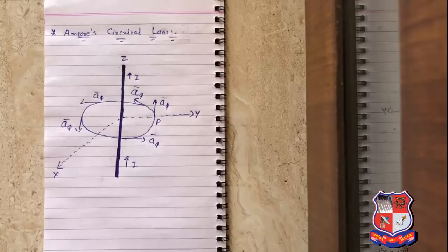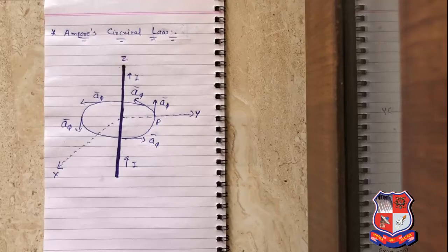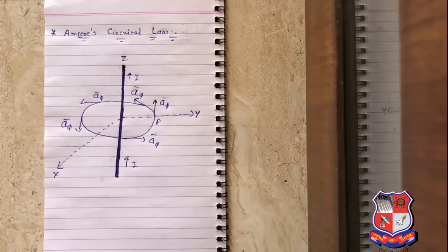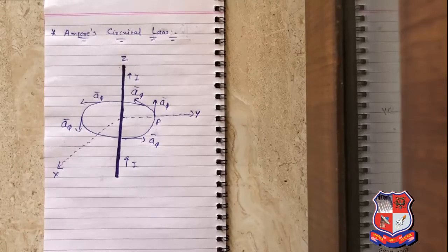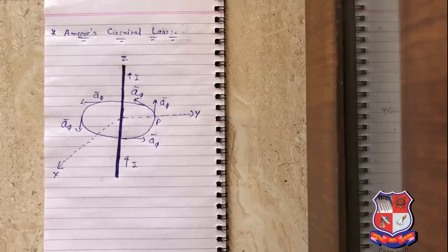Hello friends, today we will see about Ampere's Circuital Law. Ampere's Circuital Law relates with magnetostatics. In electrostatics, Gauss's Law is useful to obtain the E̅ in case of complex problems. Similarly, in magnetostatics, complex problems can be solved using the law called Ampere's Circuital Law. Another name of Ampere's Circuital Law is Ampere's Work Law.